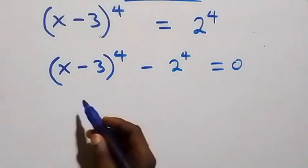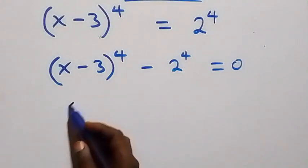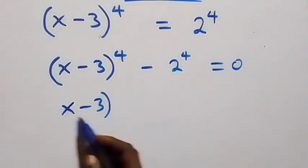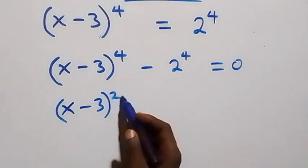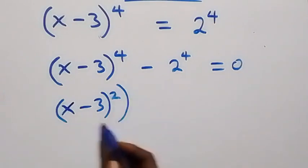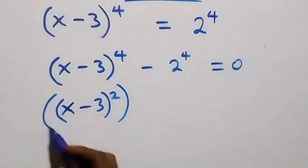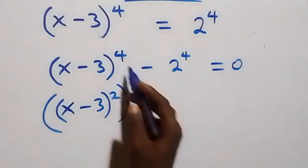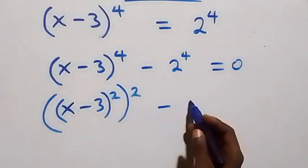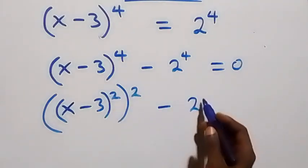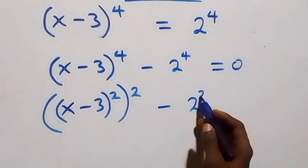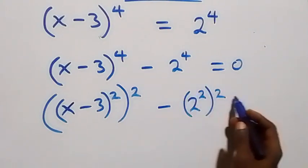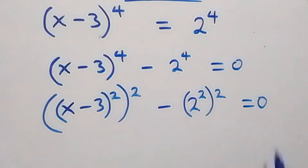From here we can also write this as [(x minus 3) raised to power 2], all raised to power 2, since 2 times 2 equals 4. Then minus 2 squared, then squared again, equals 0.